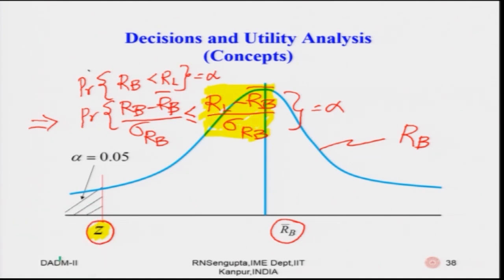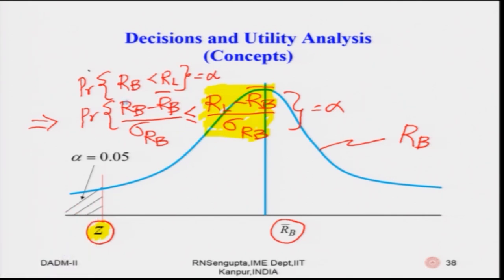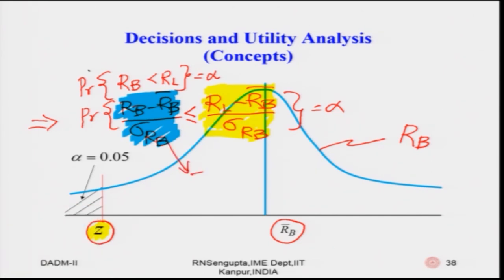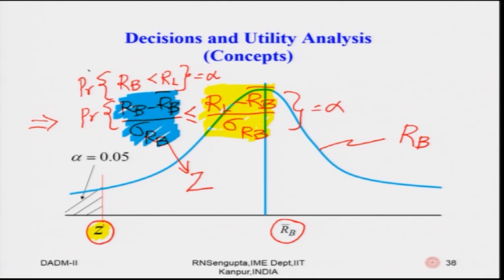The value of z is equal to (R_p − R̄_p) / σ(R_p), and we have been able to draw the distribution of capital Z — the standard normal. Technically this is the standard normal distribution Z, and the value of z on the left-hand side corresponds to the converted value of R_L. This can be done for other distributions as well.